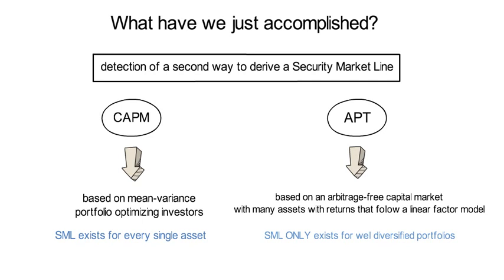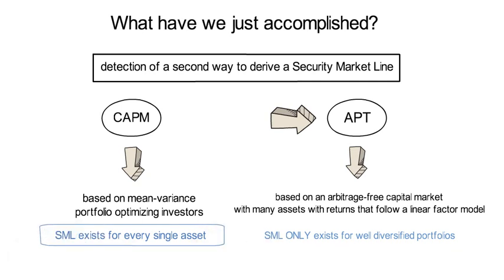Steve Ross showed that a security market line exists if the APT holds for most individual securities — he could not show it holds for all. In contrast, when working with the stronger assumptions of the CAPM, the security market line holds for every single asset.